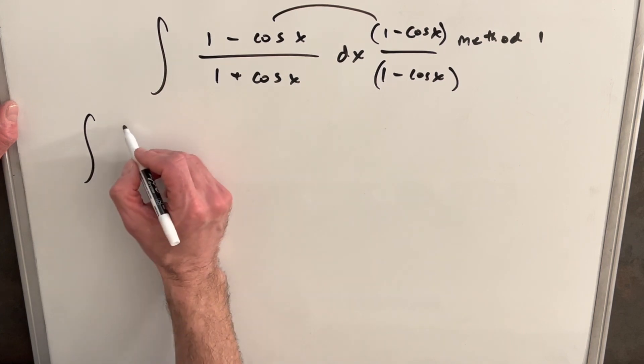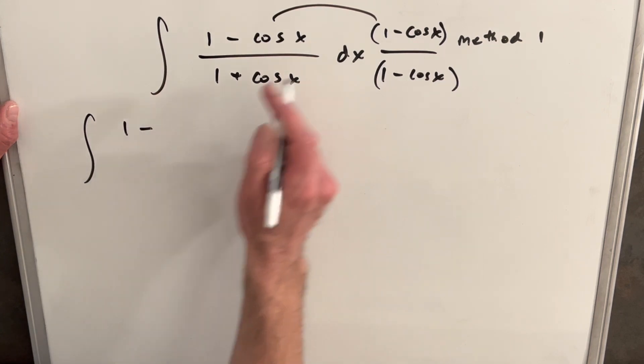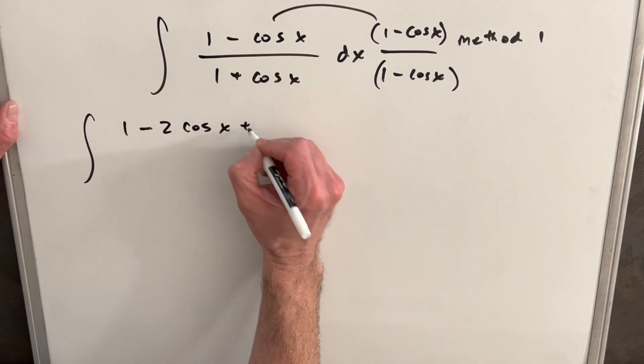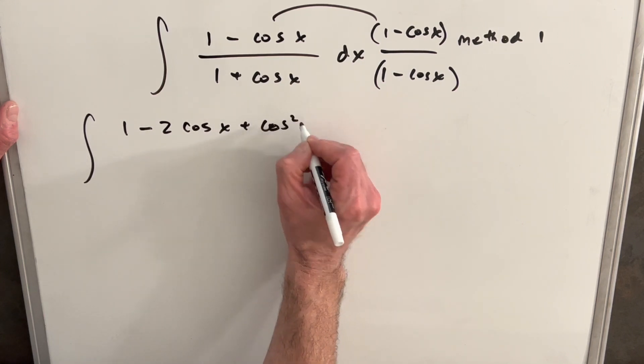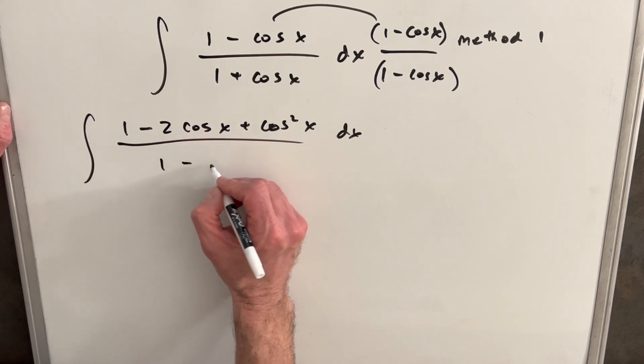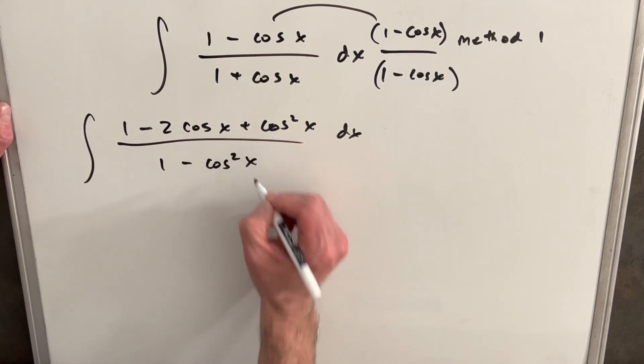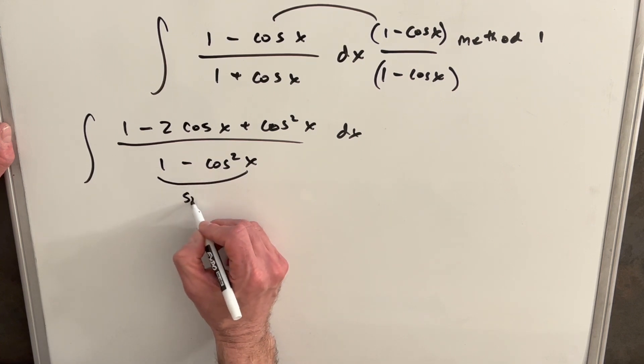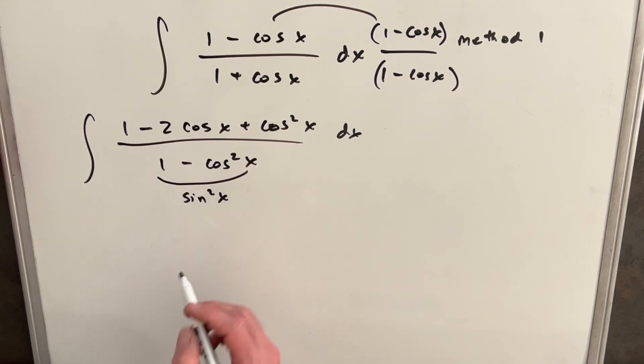we'll distribute this out. We're going to have 1 minus, the inner term is going to be minus 2 cos x plus cos² x. In our denominator, we're just going to have 1 minus cos² x. What we can do here is we notice this is actually just the same thing as sin² x, so I'm going to replace that with sin² x.